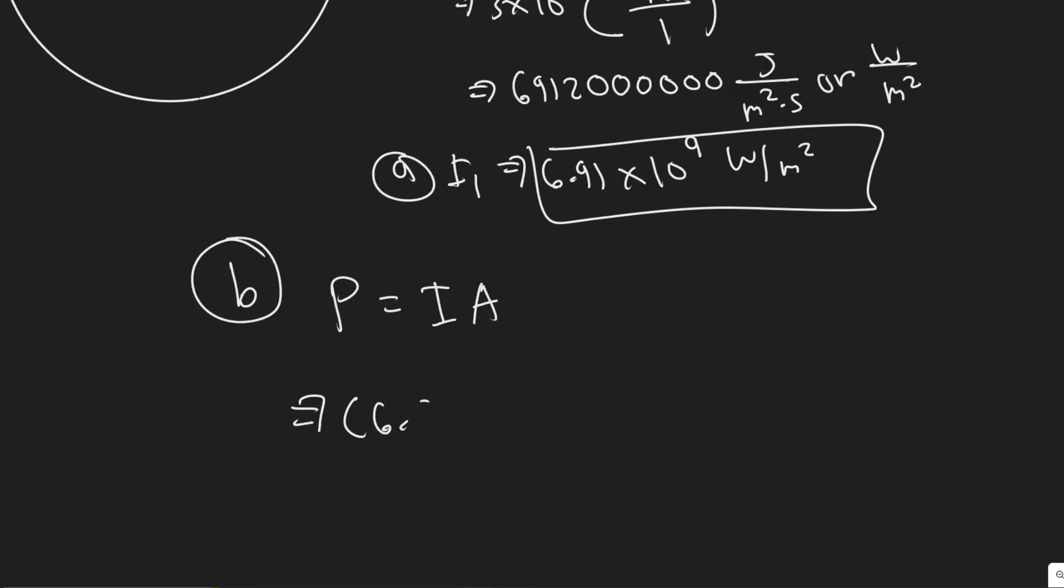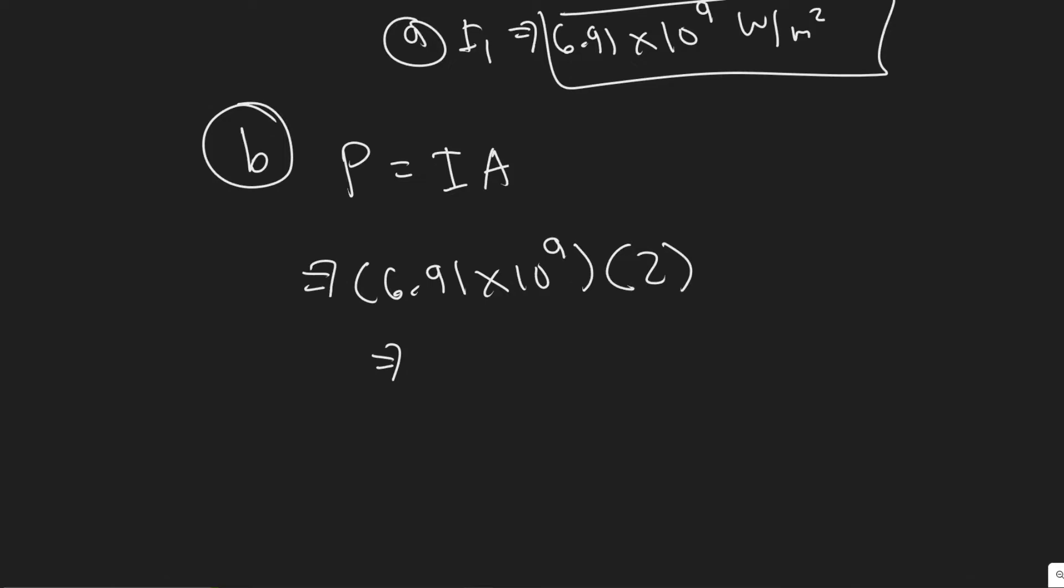And then the area, they tell us, is 2 meters squared. So we would just do that. So 6.91 times 10 to the 9 times 2. So if you go ahead and do this, what you'll find is you'll get 1.382 times 10 to the 10. So you can round it to 1.4 or however you want to round it.